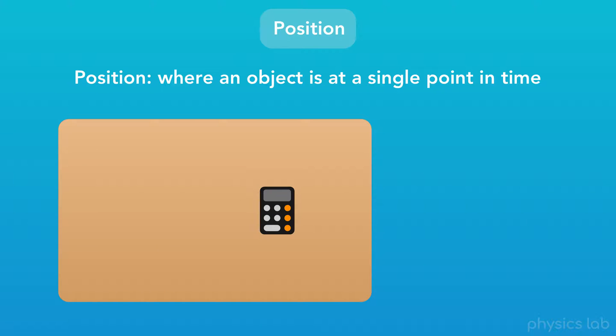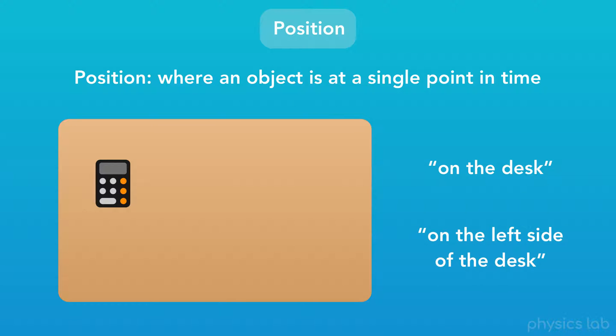For example, we might say the position of this calculator is on the desk, but the calculator could be any place on this desk. If we want to be more specific, we could say something like the calculator is on the left side of the desk. This is sort of how we're used to describing position in everyday life.